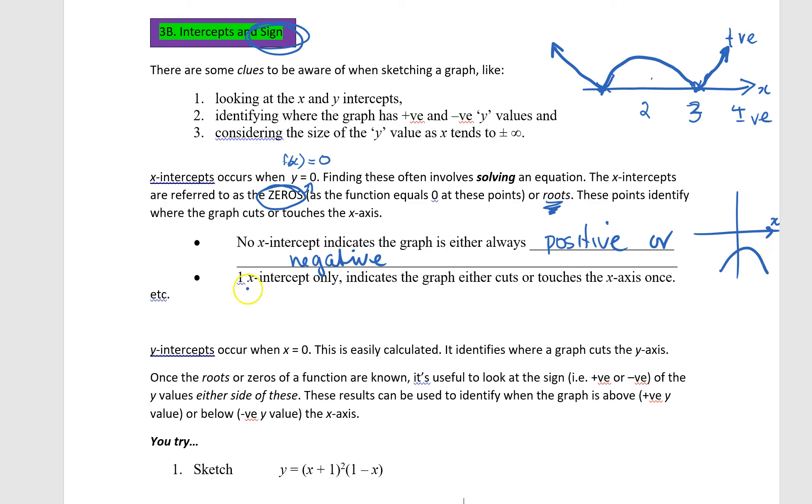If there's one x-intercept, it indicates the graph touches or cuts the x-axis once. If there are two x-intercepts, then the graph cuts or touches in two places.